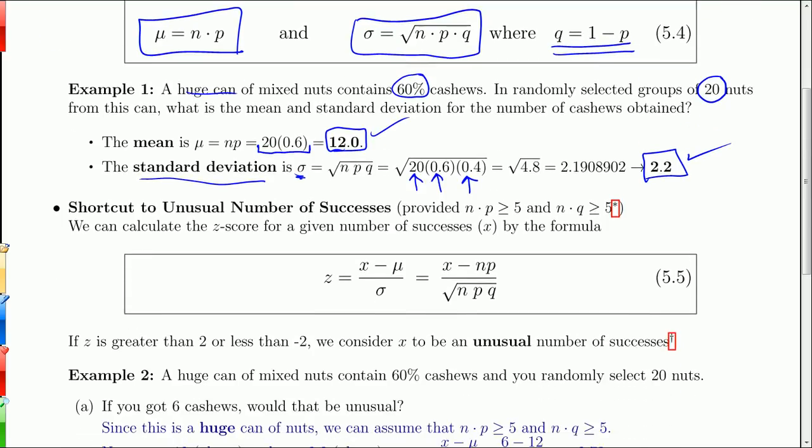Now we can actually get a little shortcut to unusual number of successes. Because if you recall, we had an earlier definition of an unusual number of successes as being a value that's more than 2 standard deviations away from the mean, or a z-score that is bigger than 2 or less than negative 2. And now we get a z-score. So suppose I have x successes. I can calculate the z-score the same way I always have: x minus mu over sigma. That's the measurement of the number of standard deviations above or below the mean x is. And so now we just put in our two formulas. There's the mean from a binomial distribution, and there's the standard deviation from a binomial distribution. So we're good to go. And again, just as in Chapter 2, if my z-score is greater than 2 or less than negative 2, we'll call x an unusual number of successes.